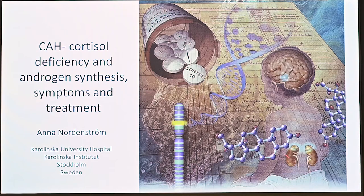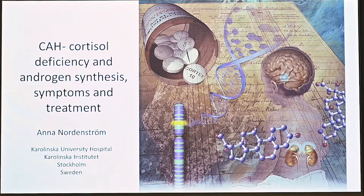The adrenal glands, shown in this picture shining on top of each kidney, are where cortisol synthesis takes place — that's the steroid synthesis. We all start with cholesterol and then there are a number of enzymatic steps to take us to aldosterone, cortisol, and also androgen synthesis. At the end it results in testosterone and DHT synthesis.